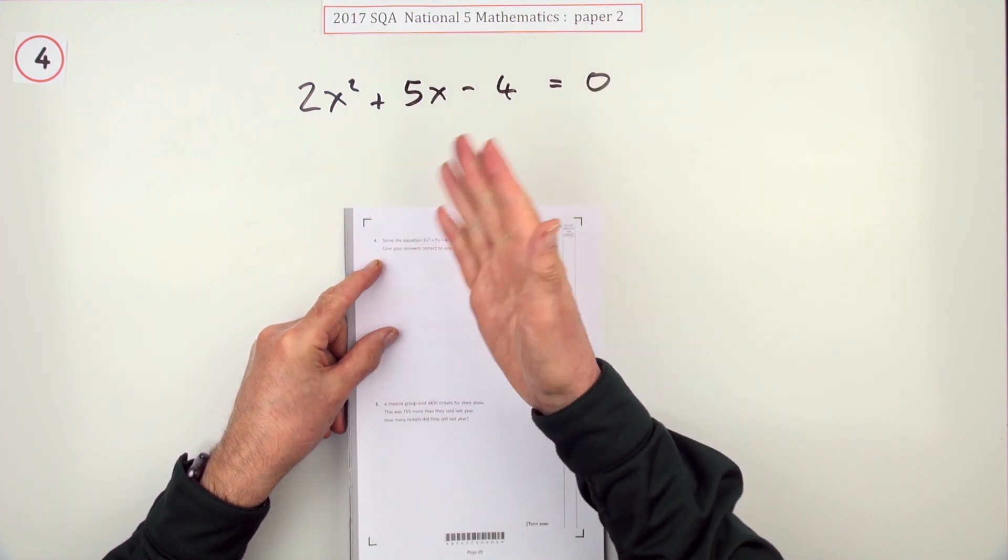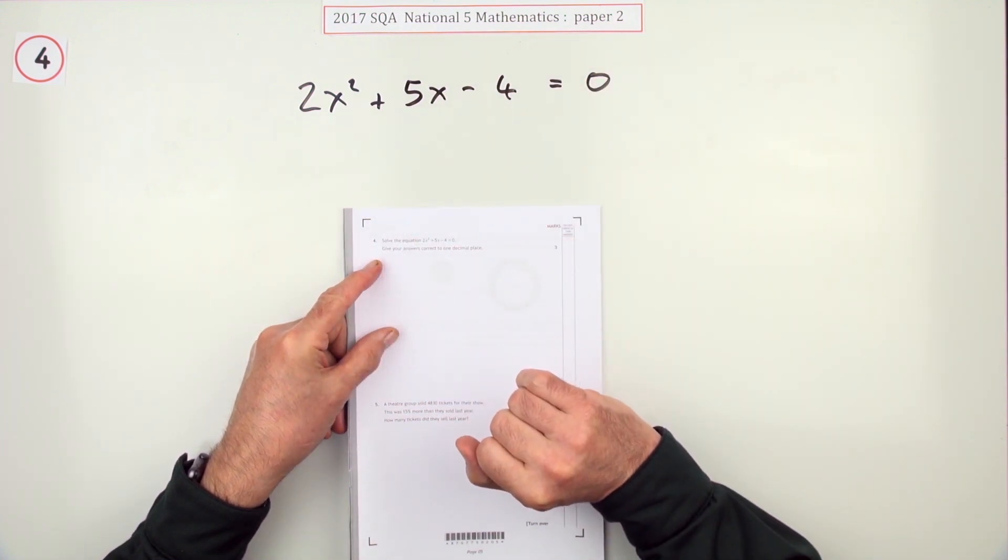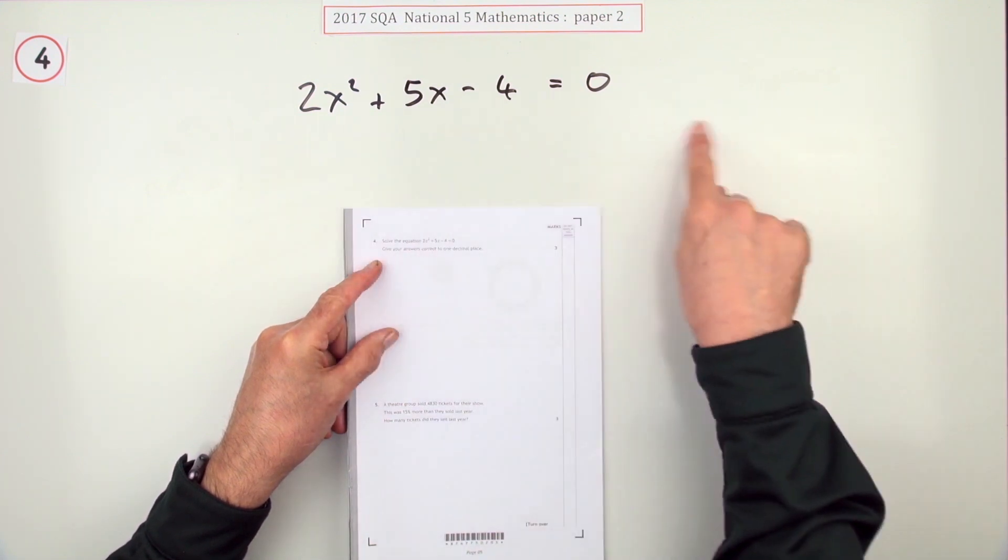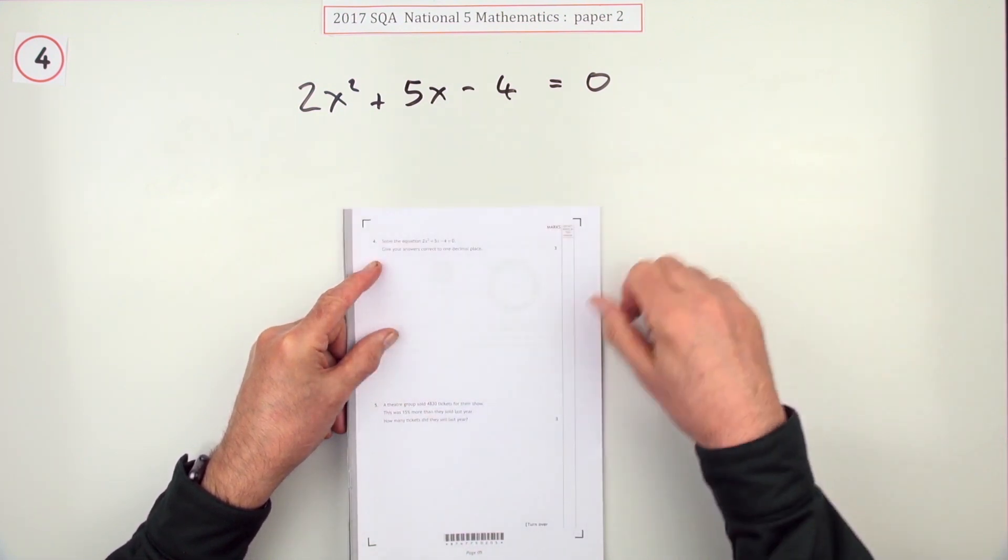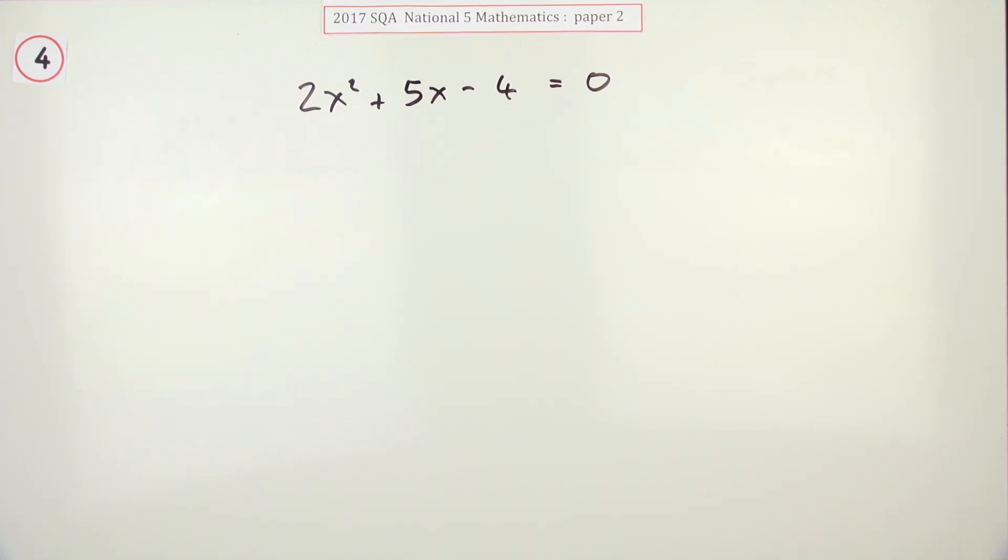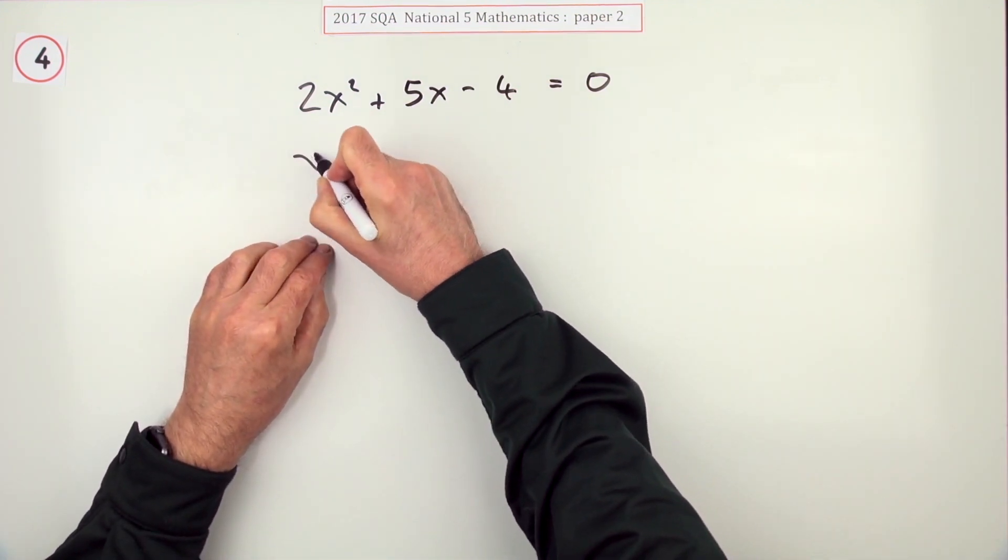Number four from paper two of the 2017 National 5 Maths, three marks. Use the quadratic formula to get the answer to this quadratic equation to one decimal place.